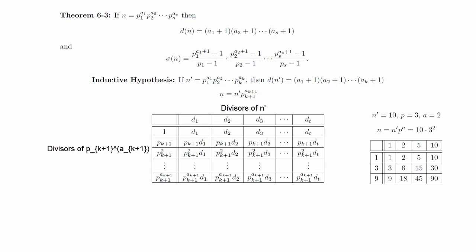As an explicit example, here's how the chart looks for n equals 90, where n prime equals 10, p equals 3, and a is equal to 2. If we pick an arbitrary divisor of 90, such as 15, we can break that number into a product of two terms, one of which divides n prime, or 10, and the other of which is a power of p, or 3.